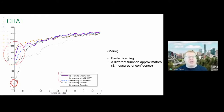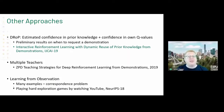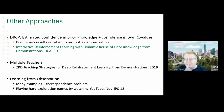The DROP paper estimates confidence not only in the demonstrator's policy but also in the agent's own policy: how long have we been training, have we seen this state a lot, are our Q-values reliable? If confidence in our own policy is high and in the demonstrator is low, we should follow our own policy. The idea of confidence is a recurring theme throughout the talk.